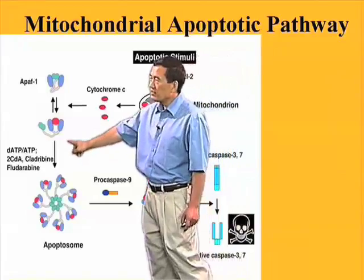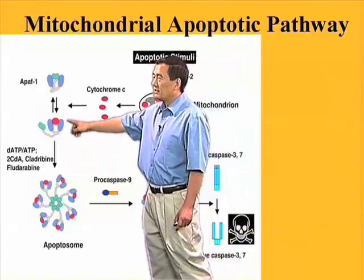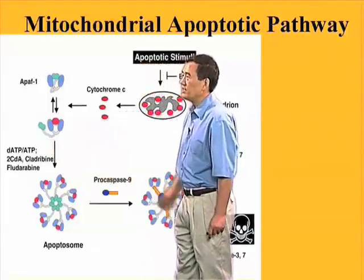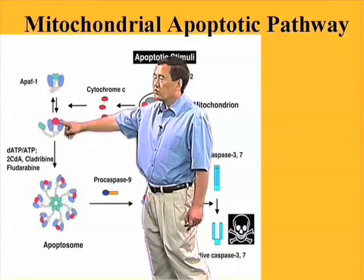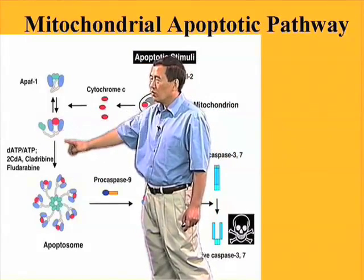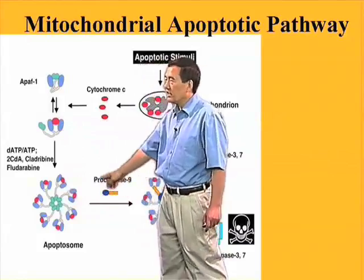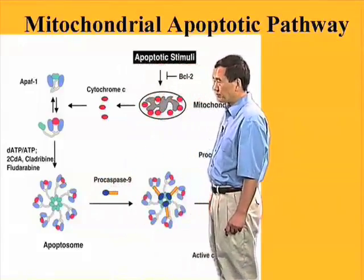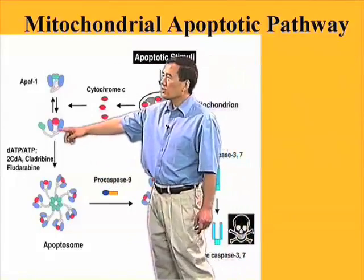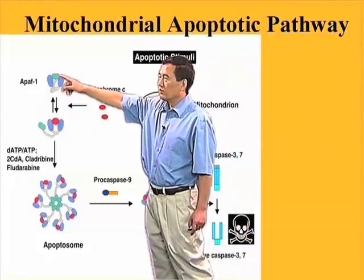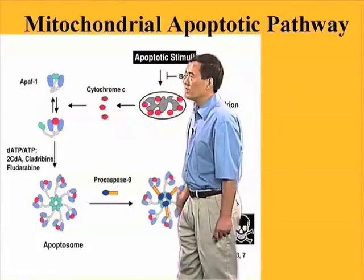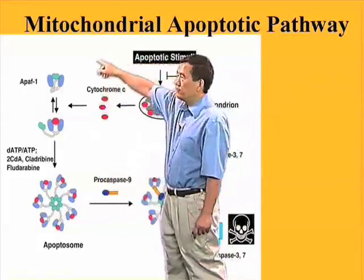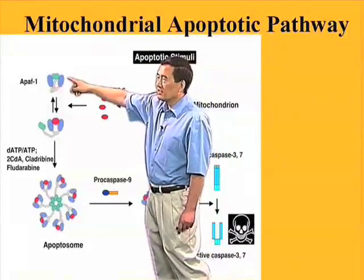In the presence of a nucleotide, preferably the deoxynucleotide dATP, cytochrome C and APAF1 will form a large heptamer protein complex, now called the apoptosome. The CARD domain of APAF1, before it meets cytochrome C and before the apoptosome forms, is folded in and not accessible.